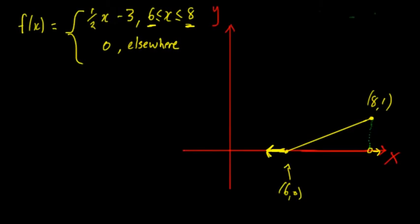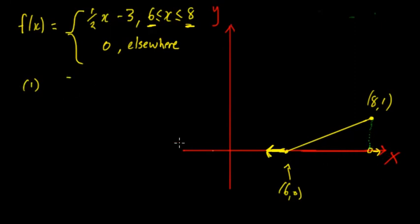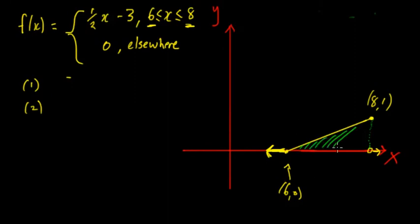The best way to demonstrate this is with an example. We have a piecewise function: f(x) = ½x − 3 on the domain 6 ≤ x ≤ 8, and zero elsewhere. First, we check that this is a valid probability density function by verifying the total area underneath equals one. The function is always positive on this domain, satisfying the non-negativity condition. The total area must equal one because the total probability must also equal one.